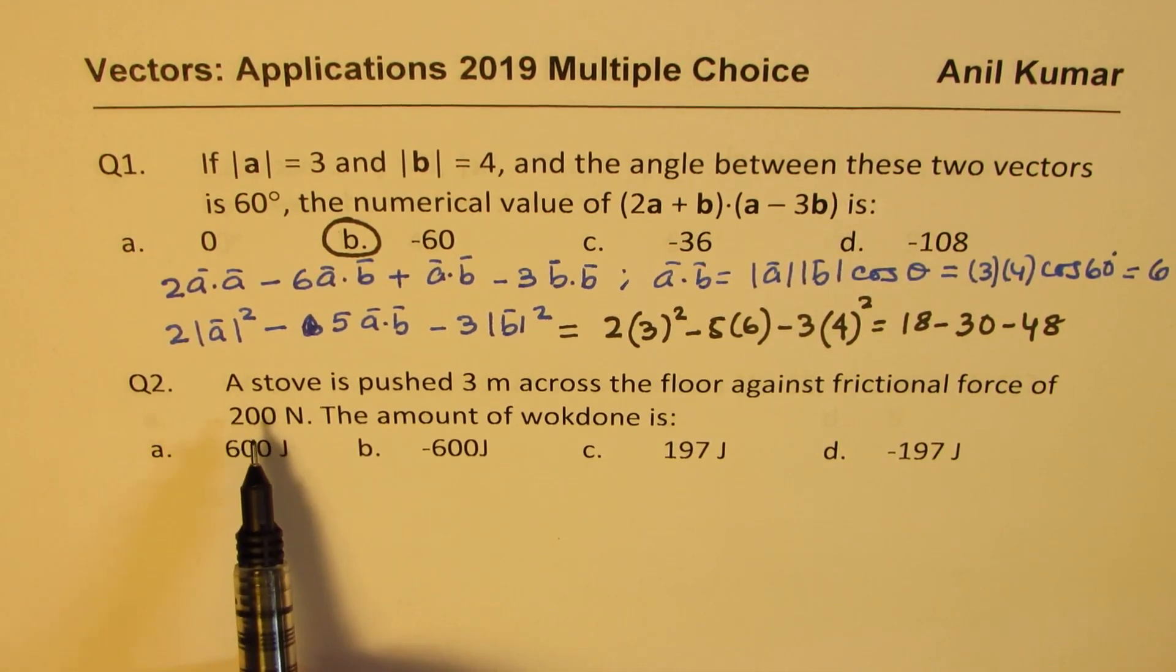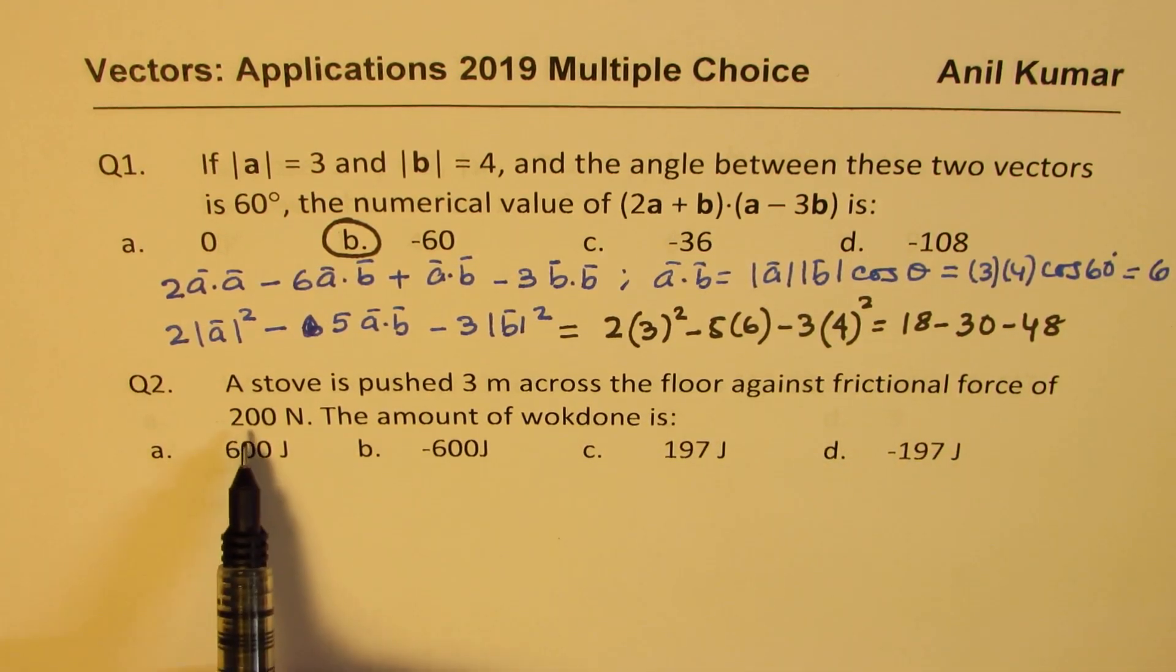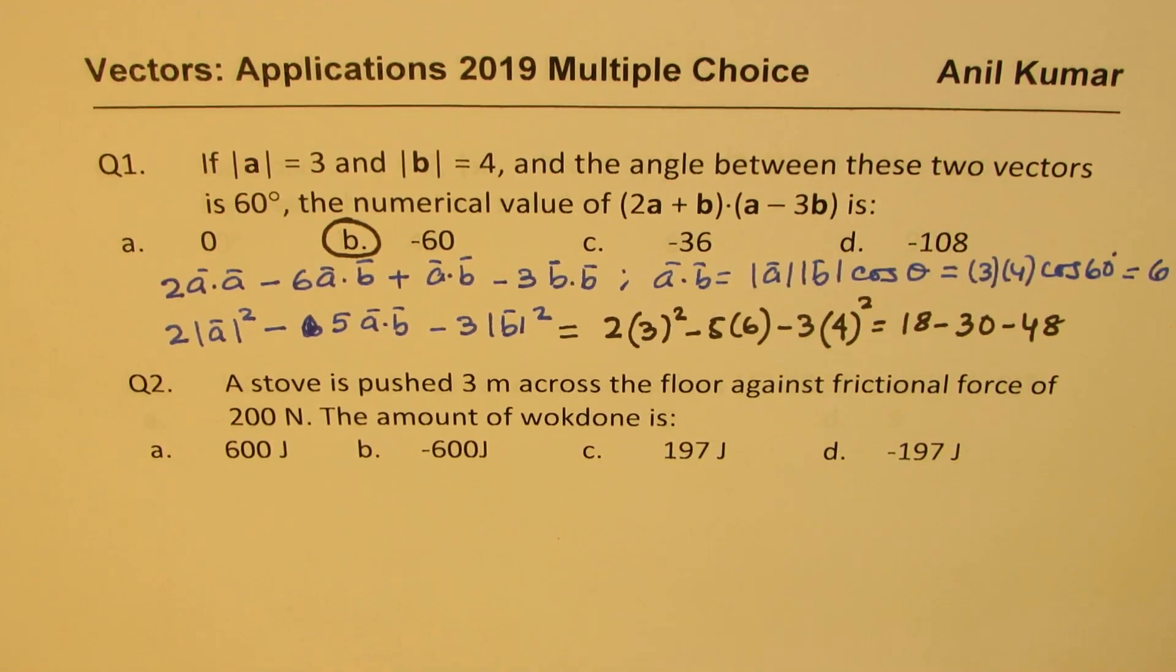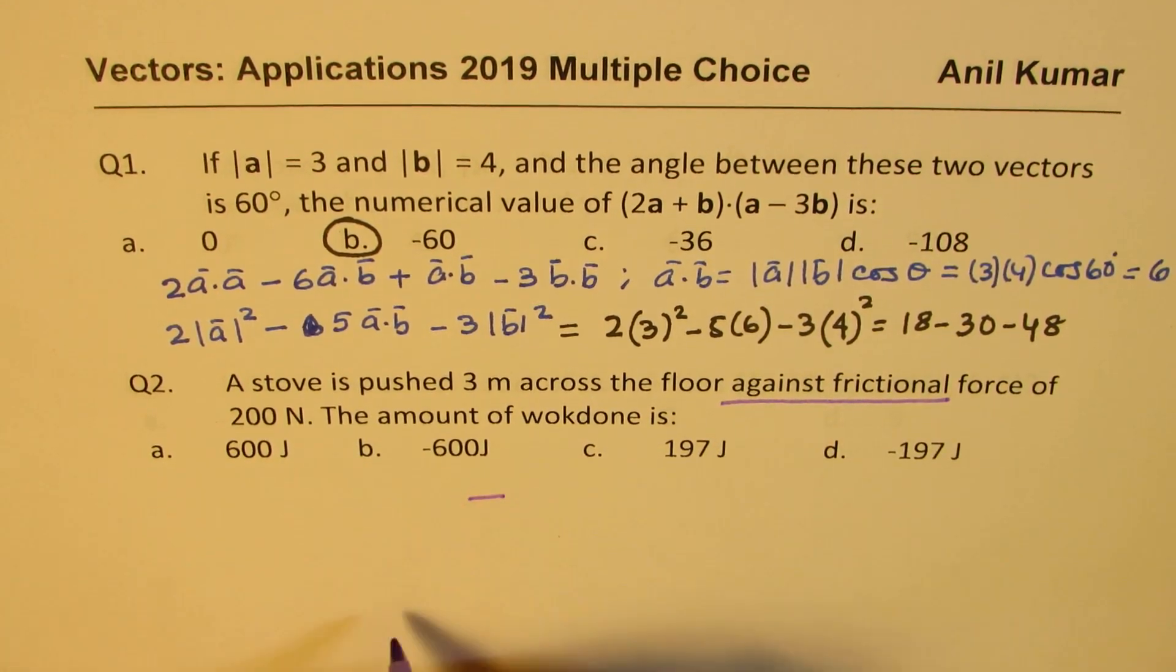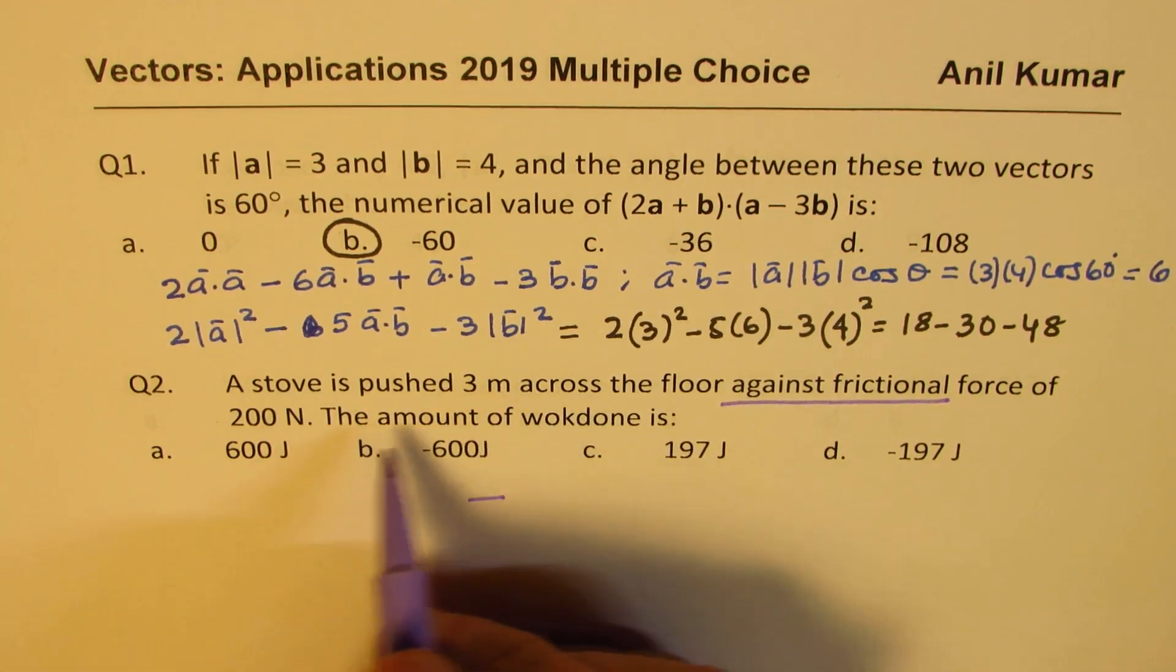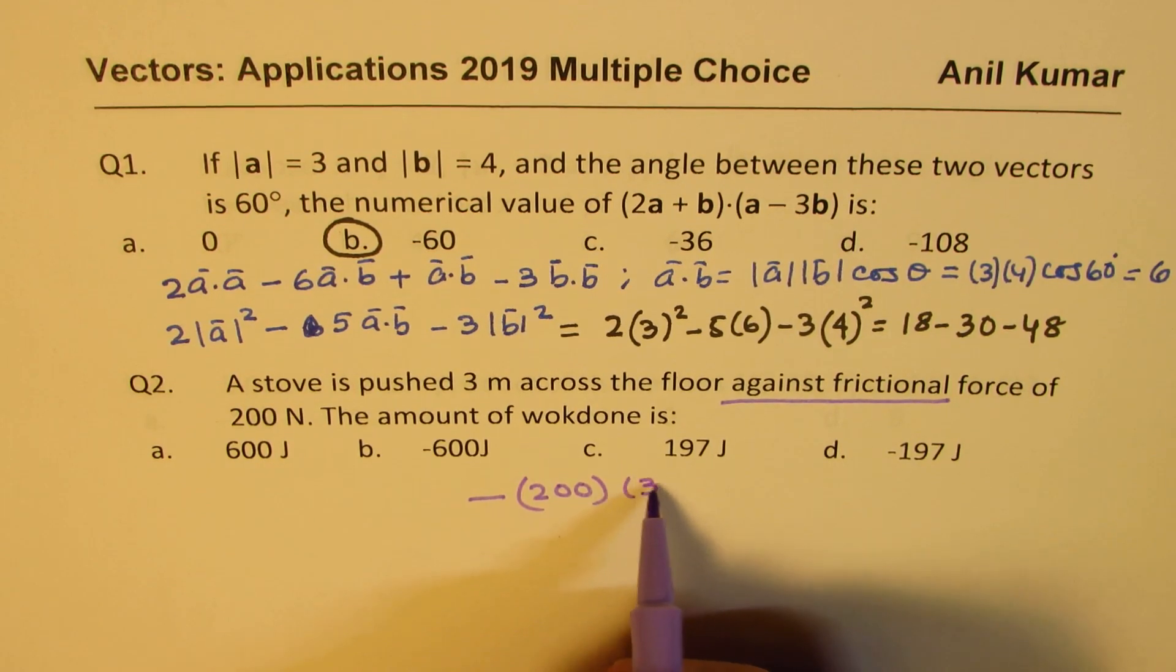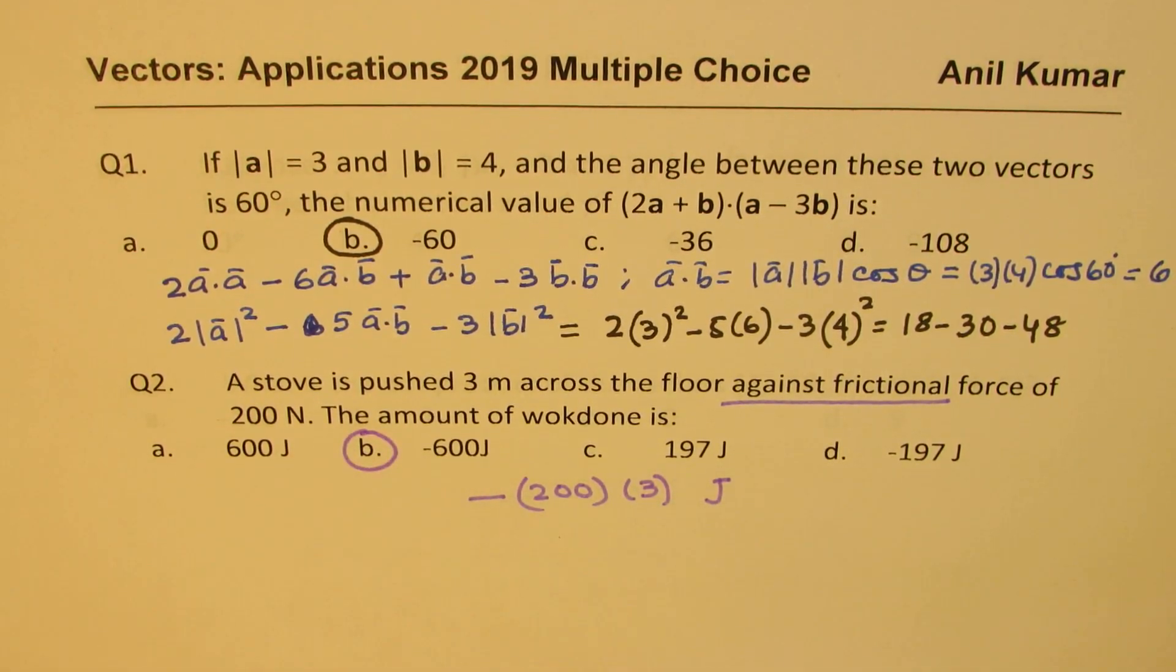Question 2. A stove is pushed 3 meters across the floor against a frictional force of 200 newtons. Find the work done. Now here, the key word is against the frictional force. So we get a negative answer. And it is the product of these two, which is the dot product. So it is 200 times 3 newton meters or joules, which is 600 newton meters.